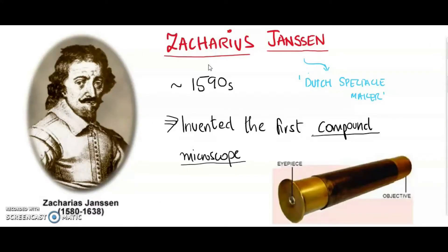Our story starts in the early 1600s in Middelburg, Holland, the Netherlands, with a spectacle maker named Zacharias Janssen. Credit for the first compound microscope is usually given to this Dutch spectacle maker around the year 1595, even though the claims may be disputed. This accomplishment is generally agreed upon among historians to be dated in the 1590s, and Janssen was very young at that time, so most historians believe that his father, who was also a spectacle maker, played an important role in the creation of this instrument.